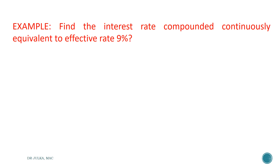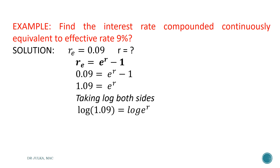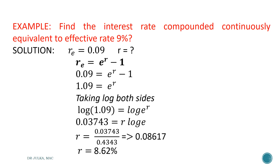In this example, we want to find the interest rate compounded continuously which is equivalent to the effective rate of interest of 9%. The effective rate is given as 9%, which implies Re is 0.09, and we want to calculate R. Using the formula Re equals e raised to the power r minus 1, and putting Re equals 0.09, we get 0.09 equals e raised to the power r minus 1, so e raised to the power r equals 1.09. Taking log both sides: log 1.09 equals r log e. Log 1.09 equals 0.03743, and log e equals 0.4343. After calculation, we get r equals 0.08617, which implies 8.62%.